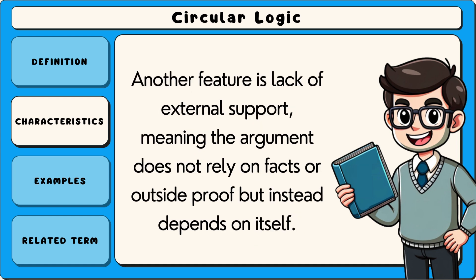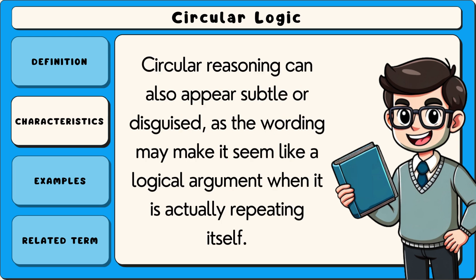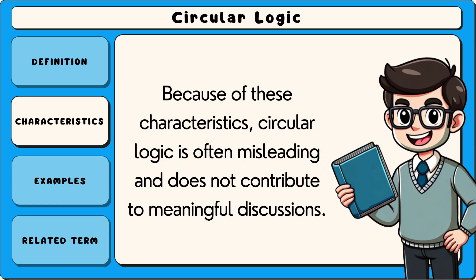Another feature is lack of external support, meaning the argument does not rely on facts or outside proof, but instead depends on itself. Circular reasoning can also appear subtle or disguised, as the wording may make it seem like a logical argument when it is actually repeating itself. Because of these characteristics, circular logic is often misleading and does not contribute to meaningful discussions.